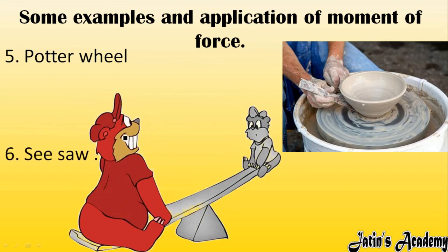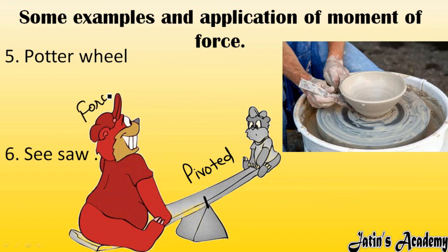In a seesaw, the central point or fulcrum is the pivoted point. Force is applied at the ends, giving maximum possible distance between the pivoted point and the application of force. Maximum perpendicular distance means more turning effect, so even by applying less force the turning effect will be more.